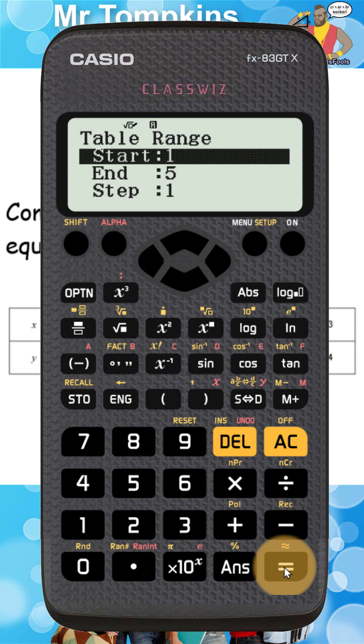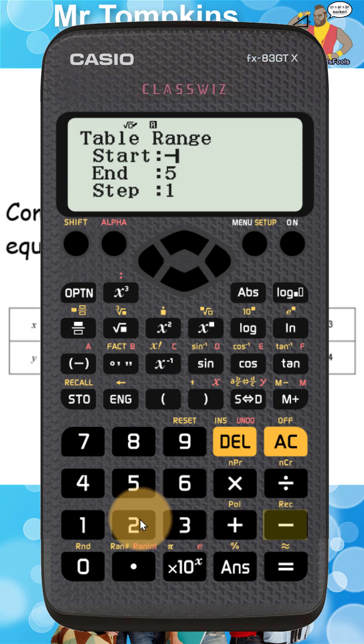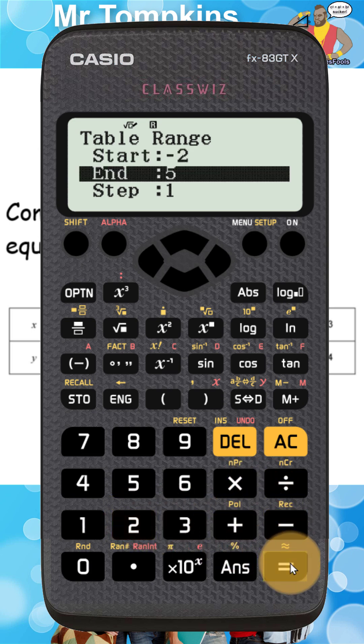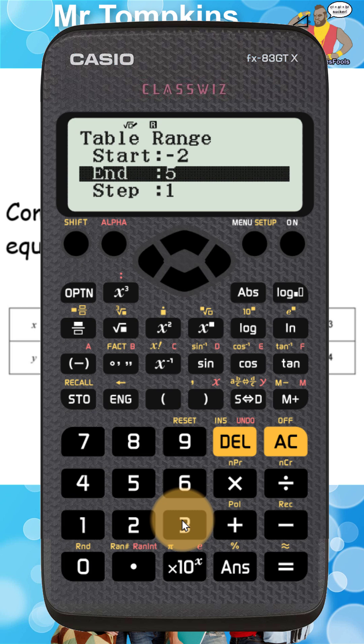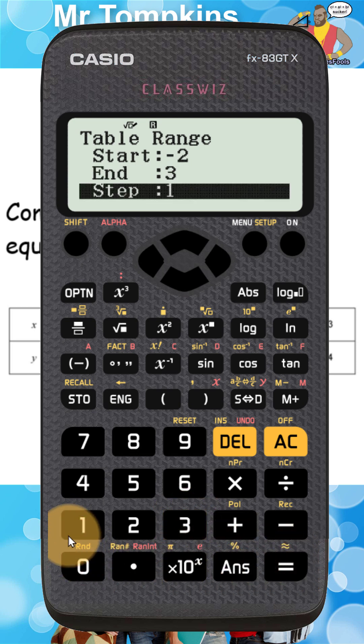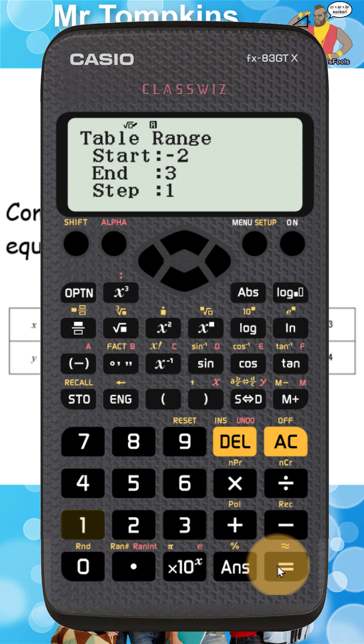Now the start value is the smallest value of x on your table. I'm going to press negative 2 and then press equals. The end value is the last value of x on my table so I'm going to press 3 and press equals. The step is what the x values are going up in so the step is 1.